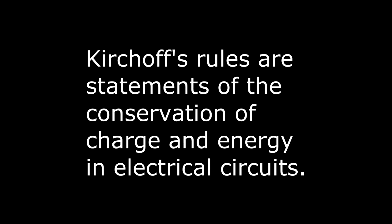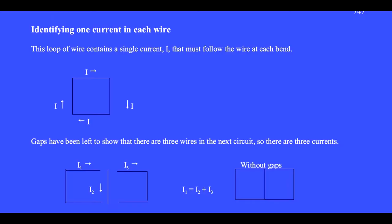Kirchhoff's rules are statements of the conservation of charge and energy in electrical circuits. The first step is to identify how many wires occur in a circuit. Each wire gets its own current. This circuit contains a single wire, so it contains a single current that must follow the wire at each bend. There is only one roadway for the charges to follow.